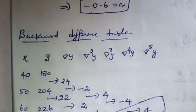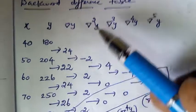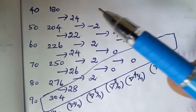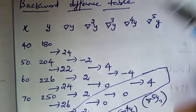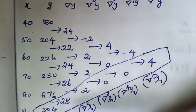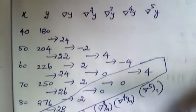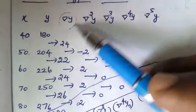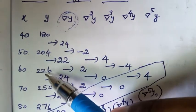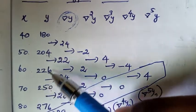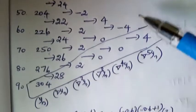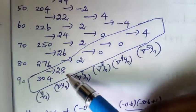Now we construct the backward difference table. The x values are 40, 50, 60, 70, 80, 90 and the y entries are 180, 204, 226, 250, 276, 304. Computing the first backward differences ∇y: 204−180=24, 226−204=22, 250−226=24, 276−250=26, 304−276=28.